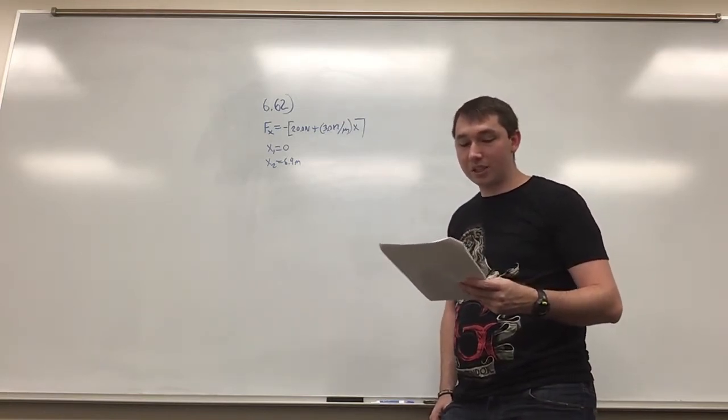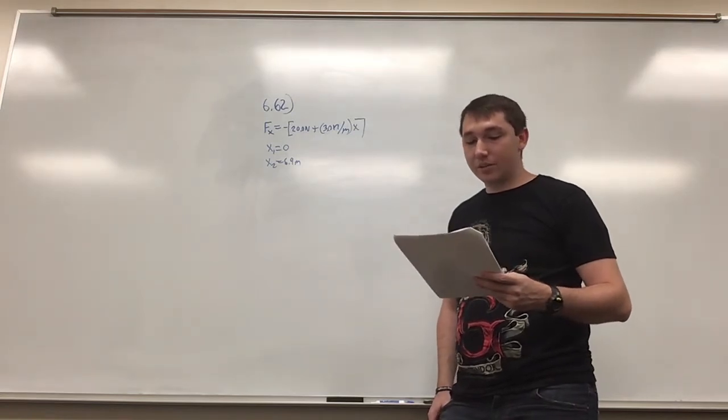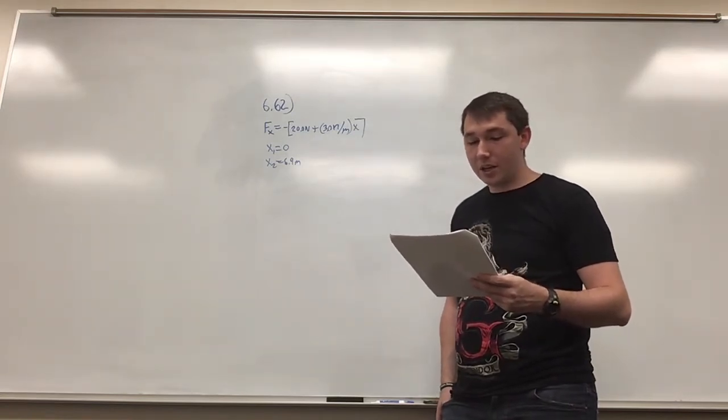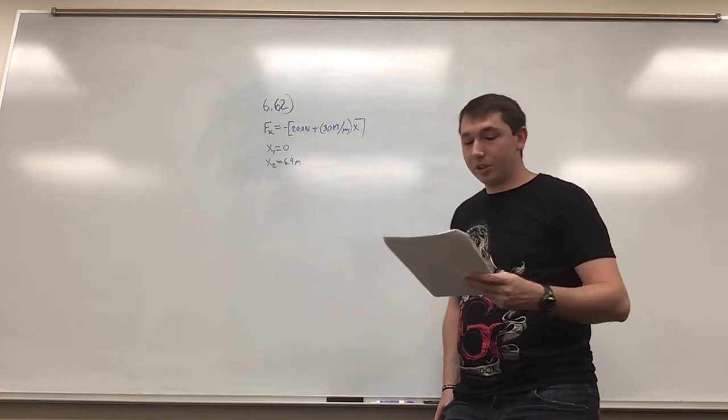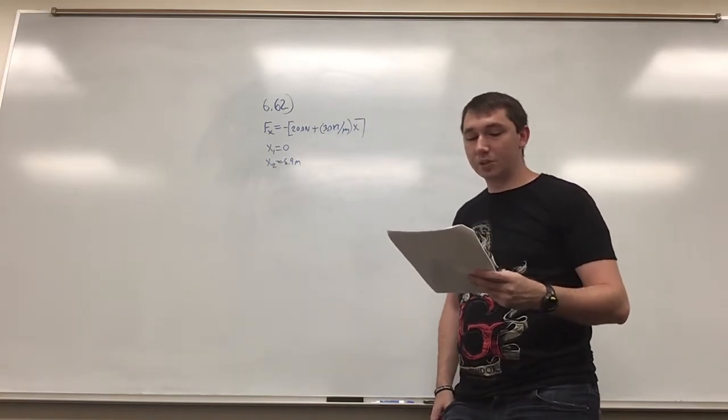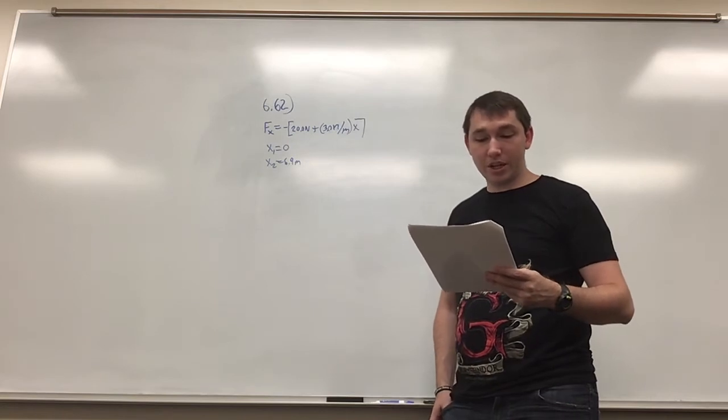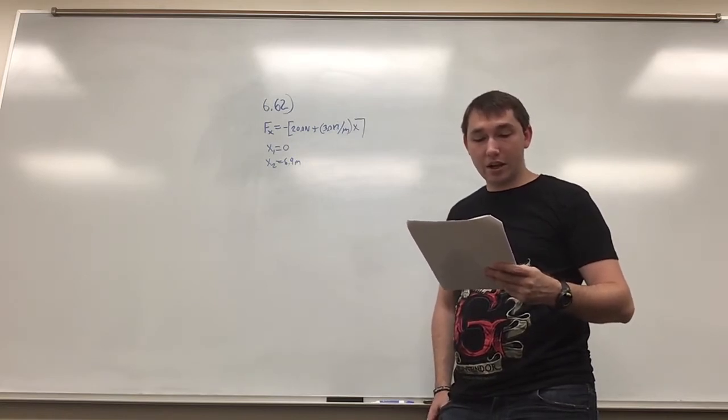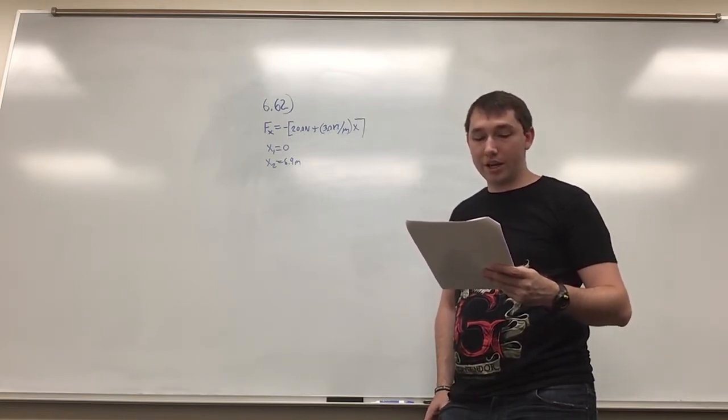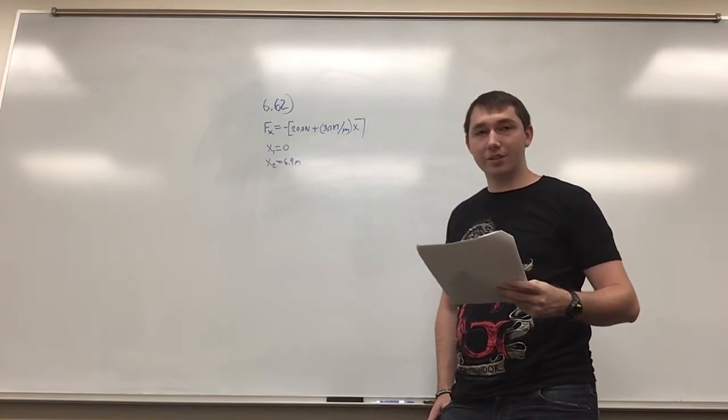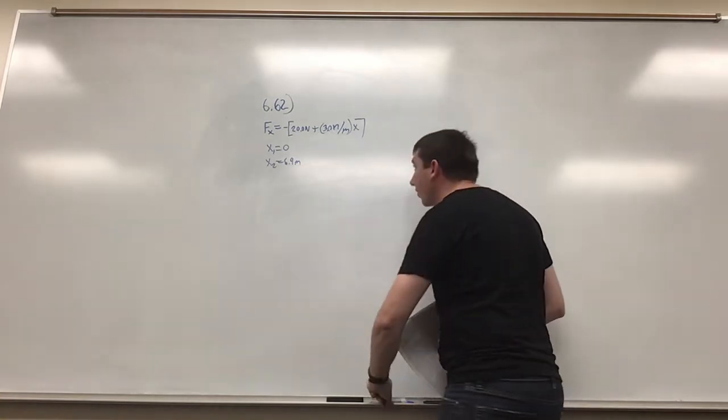As you apply a force with the x component, f of x equals negative 20 newtons plus 30 newtons per meter times x. How much work does the force you apply on the cow do on the cow during this displacement? So this is our force equation.